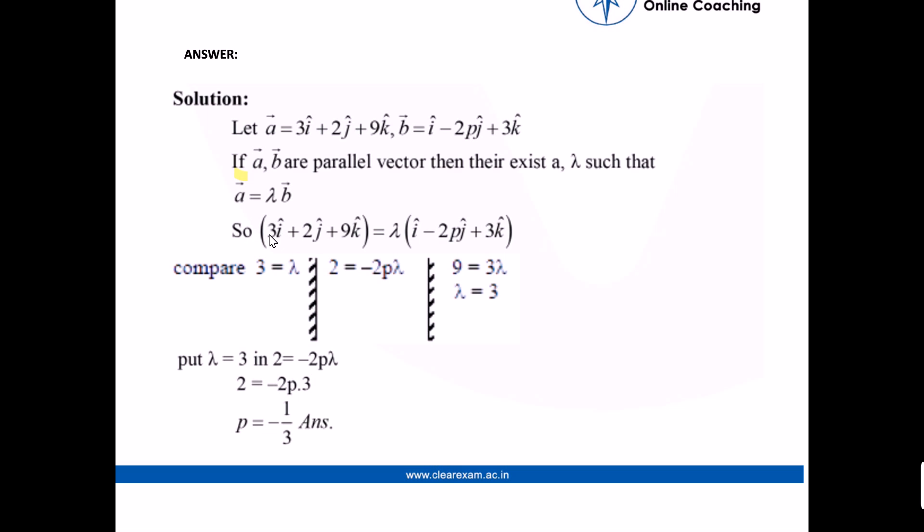So the vectors will be we just simply put the values of the vector 3i plus 2j plus 9k is equal to lambda i minus 2pj plus 3k. We compare the equation we get 3 is equal to lambda, 2 equals minus 2p times lambda and 9 is equal to 3 lambda which gives lambda is equal to 3.